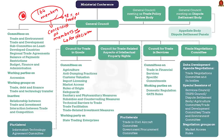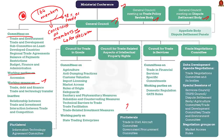WTO's top-level decision-making body is the Ministerial Conference, which meets usually every two years. Below this is the General Council, which meets several times a year at the Geneva headquarters. The General Council also meets as the Trade Policy Review Body and the Dispute Settlement Body. At the next level, there is the Goods Council, Services Council, and the Intellectual Property Council — all reporting to the General Council. Apart from this, numerous specialized committees, working groups, and working parties deal with individual agreements and other areas such as environment, development, membership applications, and regional trade agreements.